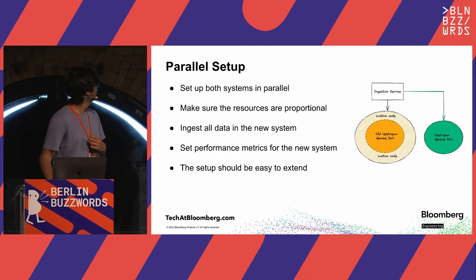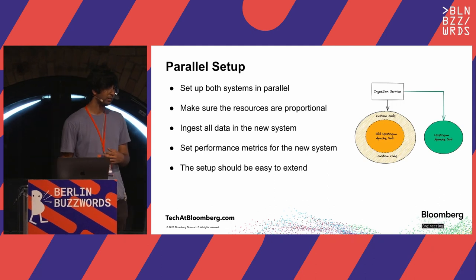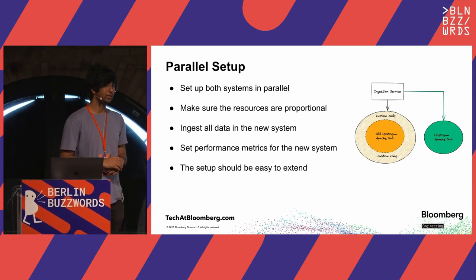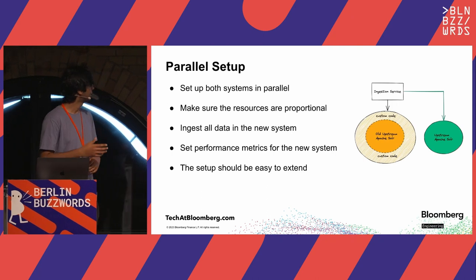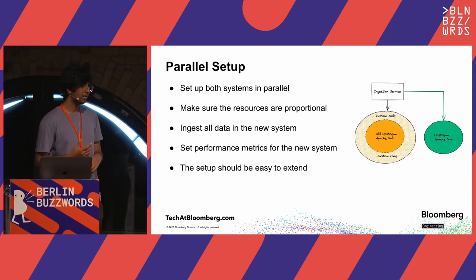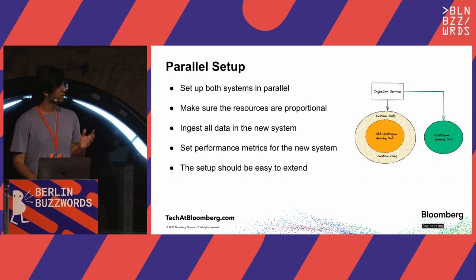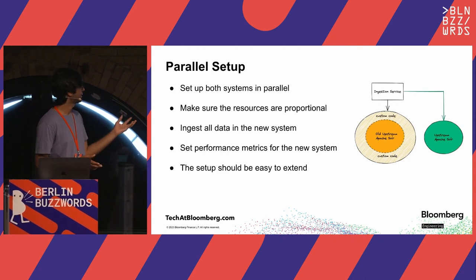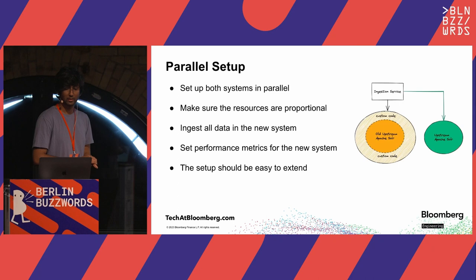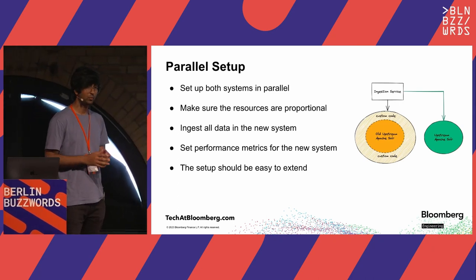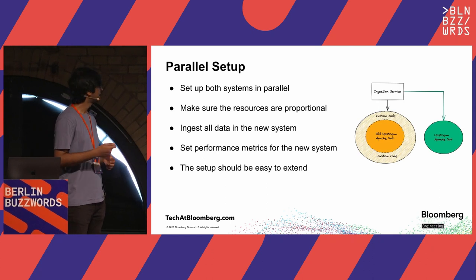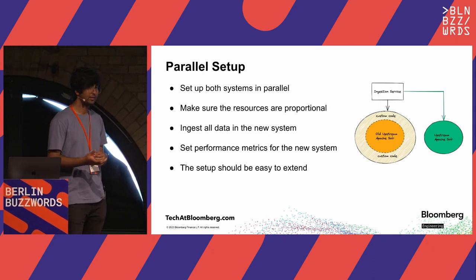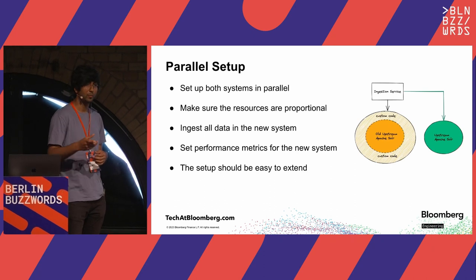Once you have a plan, here comes the actual migration. We initially created a parallel setup with the new version of Apache Solr on the other side, and then we modified our ingestion service to serve traffic to both of these systems. It's important to make sure that the resources you provide to the new system are proportional, because maybe you do not have all of the resources to give to the new one as well as the old one. A good idea is to create some performance metrics and make sure that whatever setup you have, it's easy to extend — because this is really the base of the pizza and whatever comes later is just the toppings.